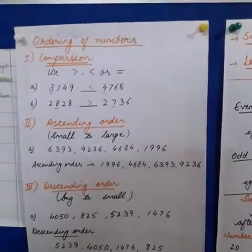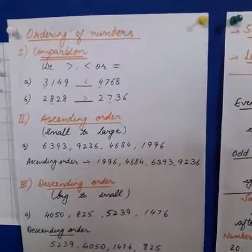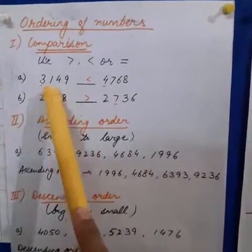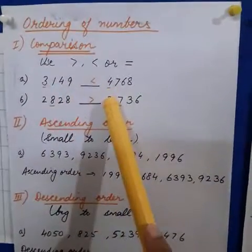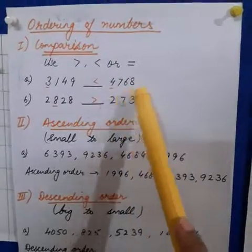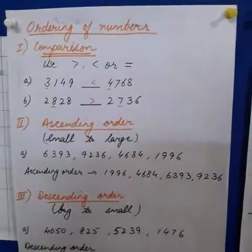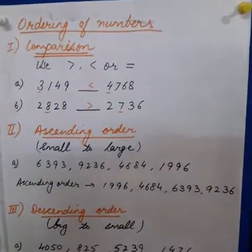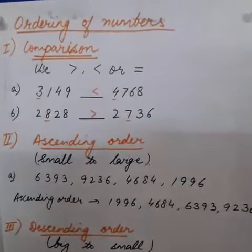How to compare the given two numbers? For example, we are having 3149 and the other number is 4768. Now, we have to compare these two numbers by using the sign greater than, less than, or equals to.